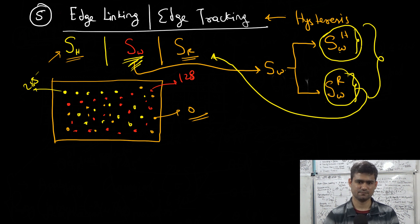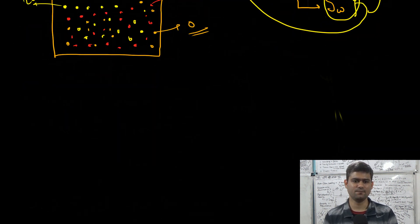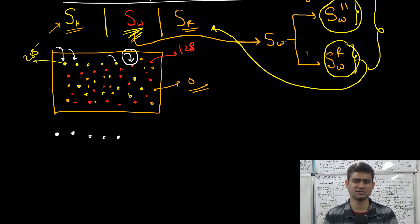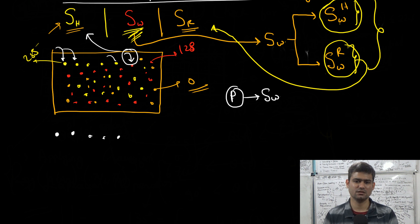The way the Canny edge detector algorithm works is: we process each pixel in the image one by one, and all the strong edge points are preserved. If any pixel coordinate P in set SW is connected to any pixel in set SH, then this point is preserved and transferred to set SH. We use an eight-connected neighborhood.